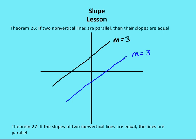Here's a theorem based on lines that are parallel. If we have two non-vertical lines and they're parallel, then their slopes are going to be equal. We specify non-vertical lines because vertical lines have undefined slopes, and we can't say undefined equals undefined. So if two non-vertical lines are parallel, their slopes are equal. Conversely, if the slopes of two non-vertical lines are equal, then the lines are parallel. The theorem works in both directions, so it's reversible.